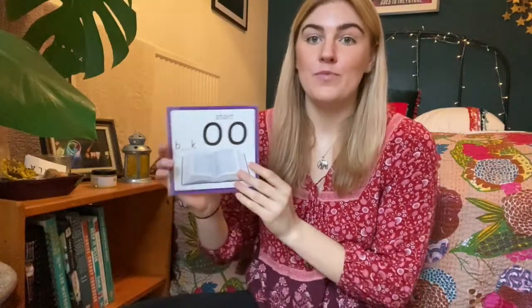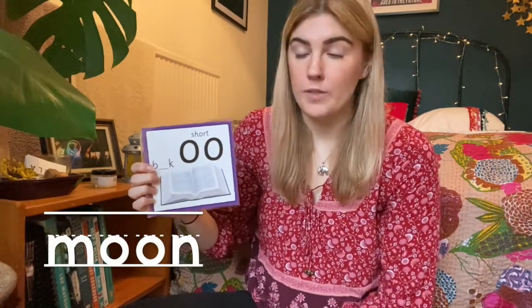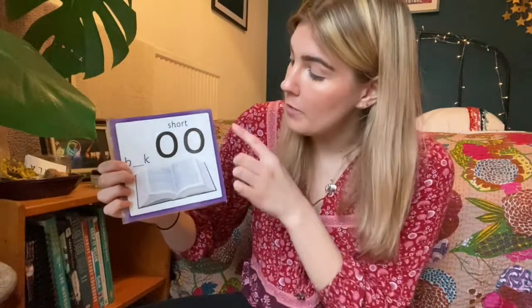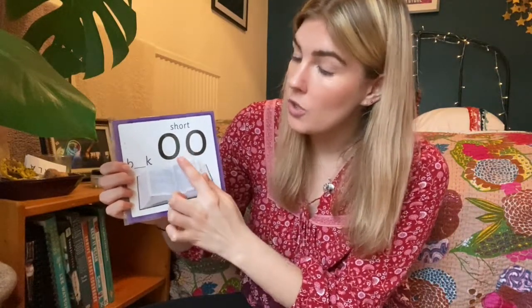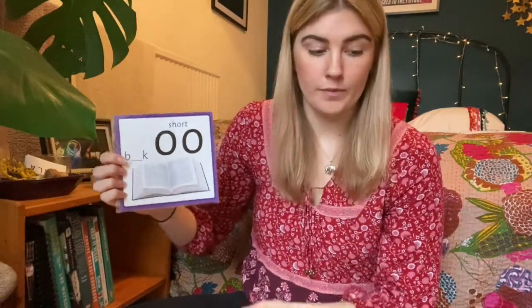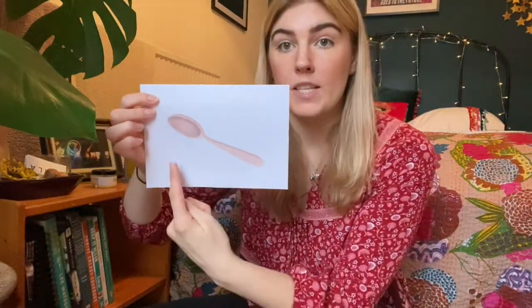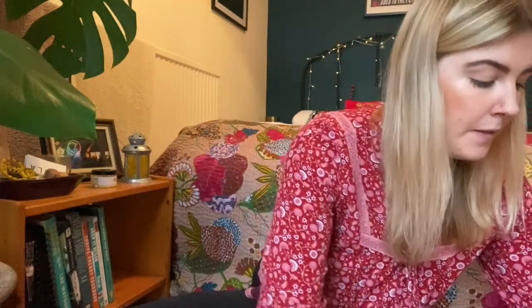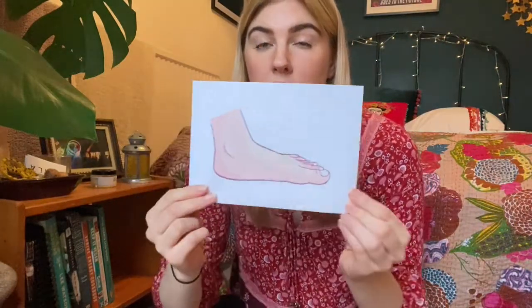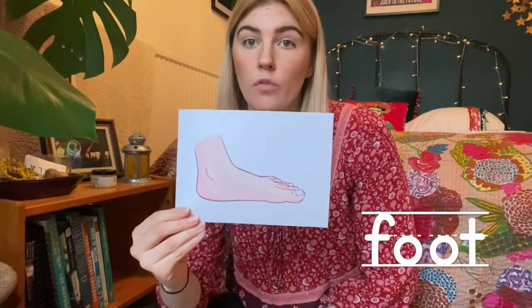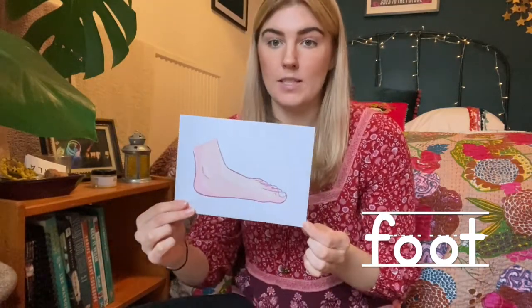So reception, you've recently learnt the long OO sound which makes an OO sound for words like moon. But today we're going to learn something a little bit different. We're going to learn the short OO sound which makes an OO sound for words like book. OO. So in your previous learning you've done words like spoon, because the middle sound is an OO. But today's learning is going to be for words like foot. OO sound in the middle.